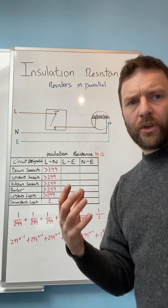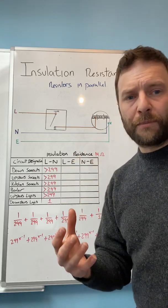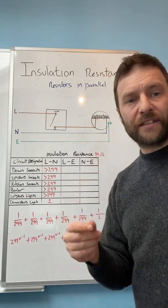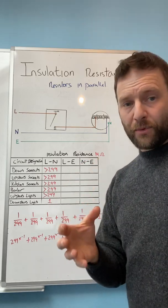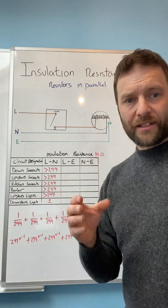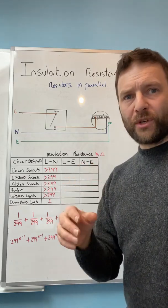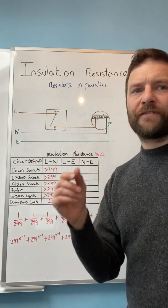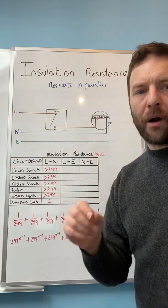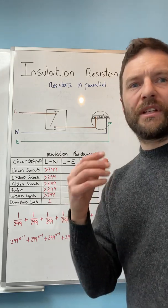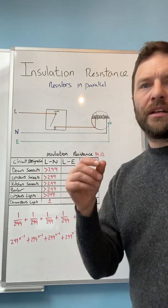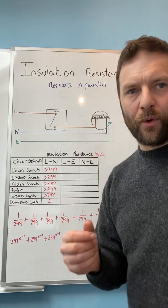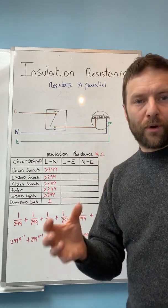So for instance if you look at regulation 643.3.2 it says the installation resistance measured with the test voltages indicated in table 64 shall be considered satisfactory if the main switchboard and each distribution circuit tested separately with all of its final circuits connected but with current using accessories and equipment disconnected has an insulation resistance not less than the appropriate value in table 64. And obviously that value is one mega ohm.